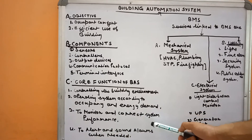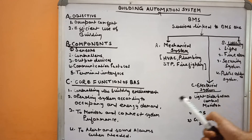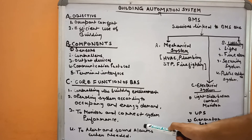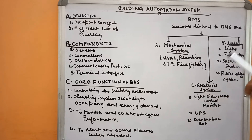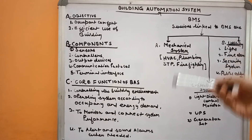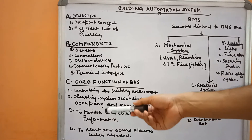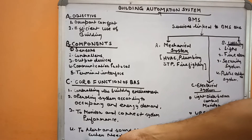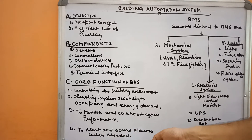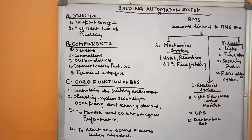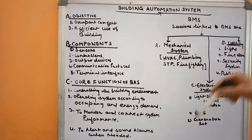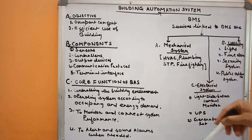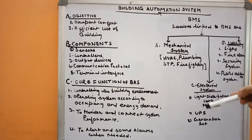Another core function is to monitor and correct system performance. The system monitors and corrects any malfunction or threat in the system. There is also an alert and alarm system — when a threat or malfunction is identified, the system alerts the operator as well as triggers automatic correction.